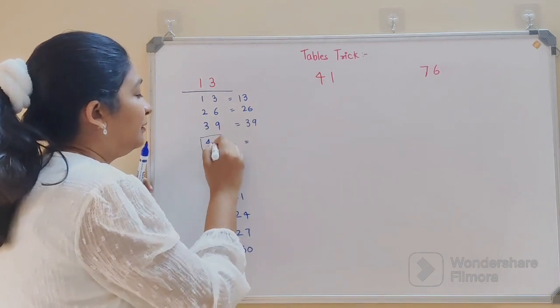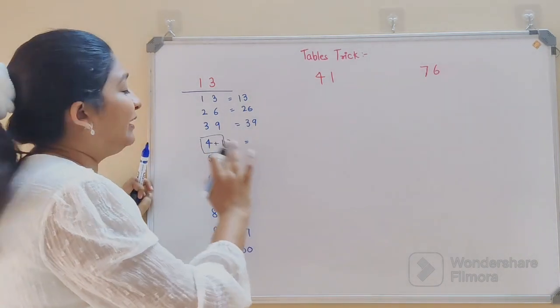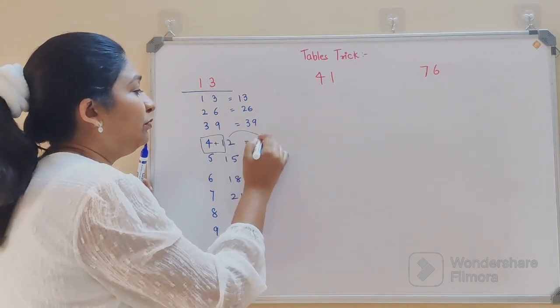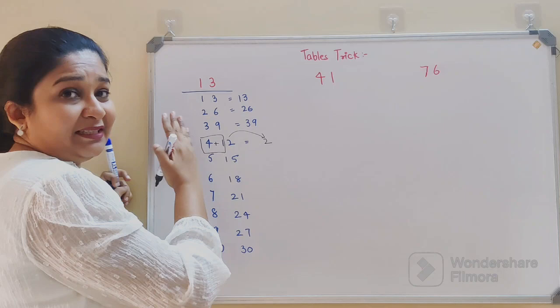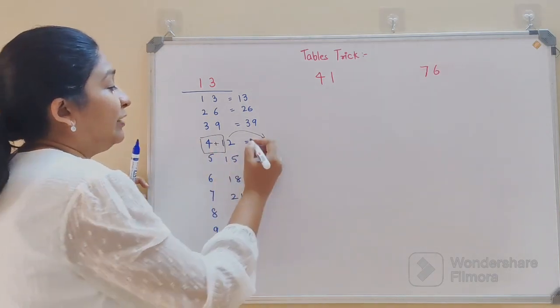You add the tens digit and leave the units digit as it is. So 2 will be written as it is, and then whatever is left over gets added to the next number. So 1 plus 4 will get you 5.